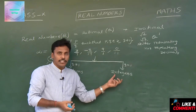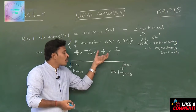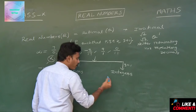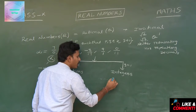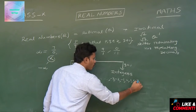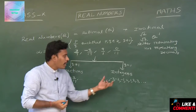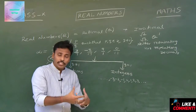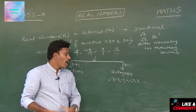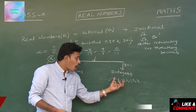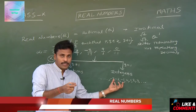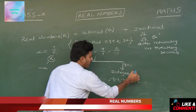Coming to integers — the rationals whose denominator is 1 are termed as integers. We learnt in our previous class that integers consist of negative numbers, 0, and positive numbers. The term 'integers' is denoted by the letter Z because in Greek, 'opposite' means 'zenith' — and since opposite numbers are included in integers, they are denoted by Z.